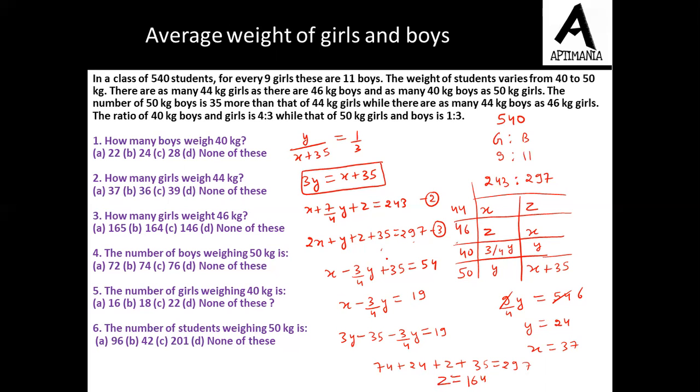So z will come out to be 164. So this was the basic question based on equations. Now we can simply answer all these questions. How many boys weigh 40 kg? That's y, which is 24. How many girls weigh 44 kg? That's x, which is 37. How many girls weigh 46 kg? That's z, which is 164.